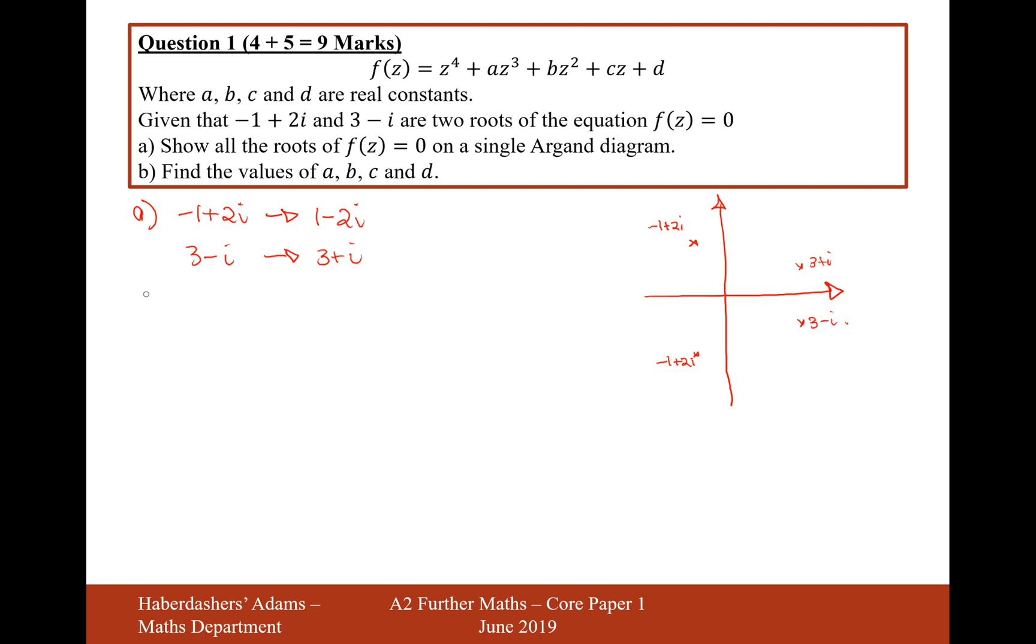Moving on to part b now, find the values of a, b, c, and d. I'll find the quadratic for -1+2i and -1-2i, then I'll find the quadratic for 3-i and 3+i, and then combine the two quadratics together.